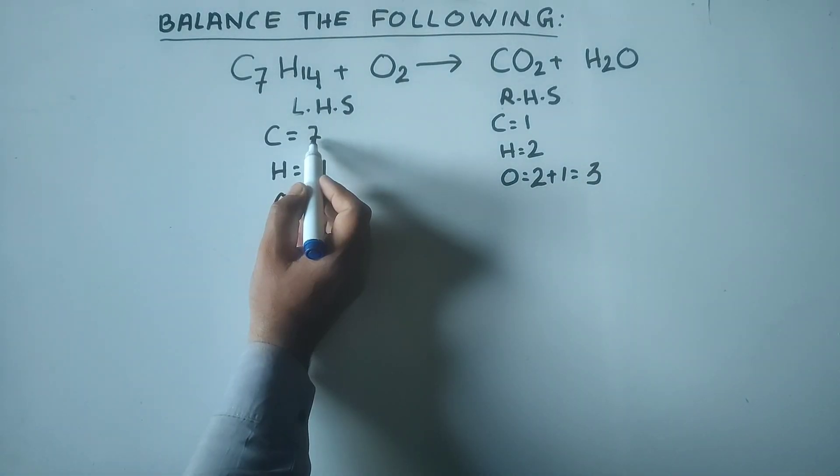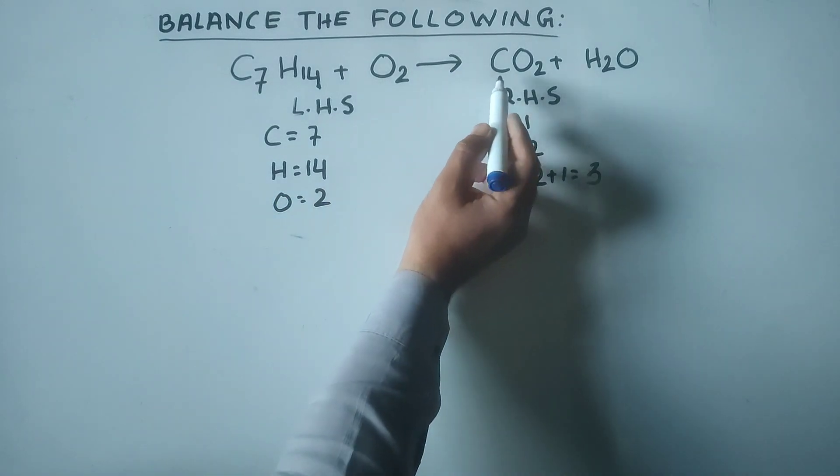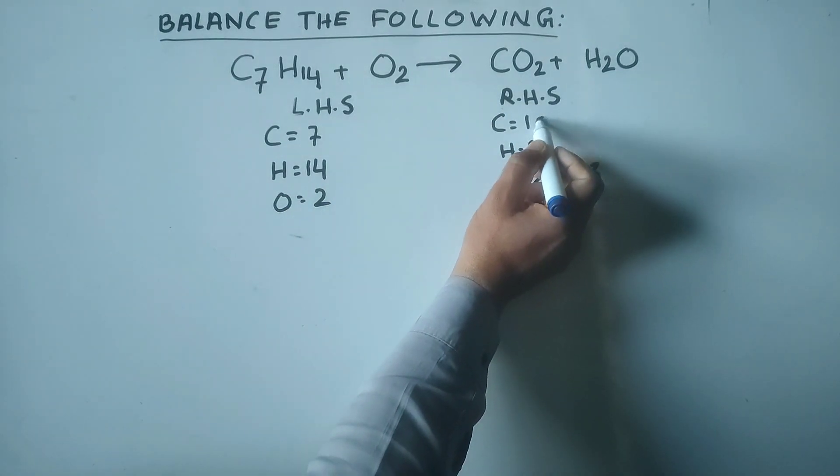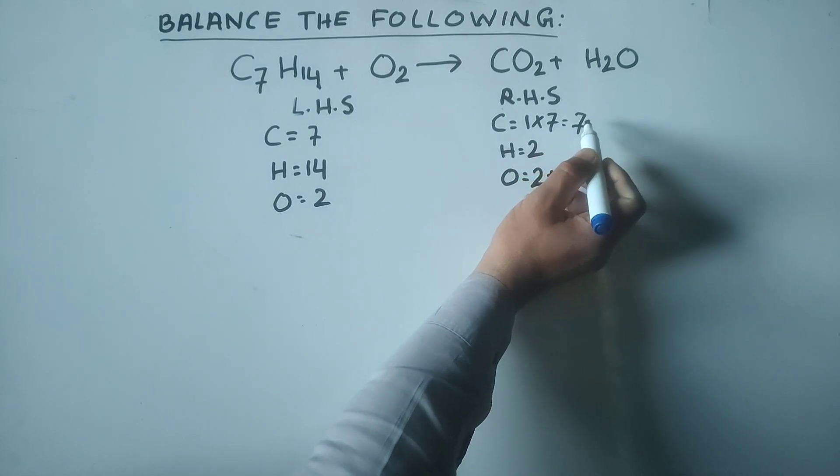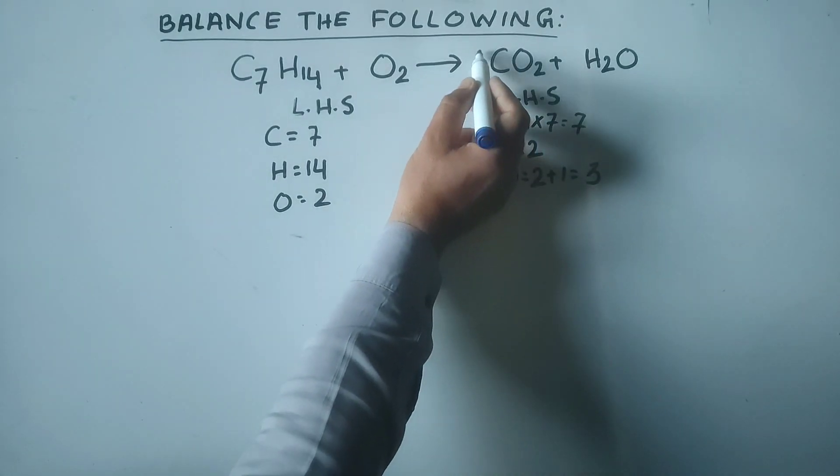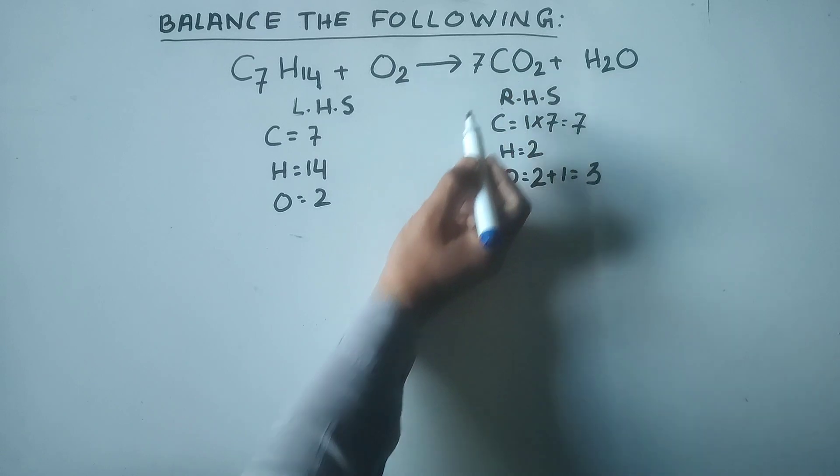To balance the number of carbon atoms, there are 7 carbon on the left and 1 carbon on the right. If this 1 is multiplied by 7, it means for carbon dioxide we add 7.